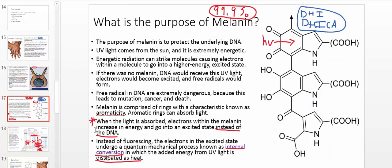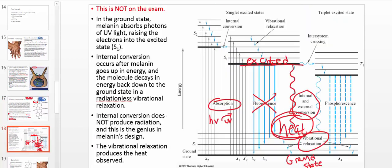So basically what I would ask you on the test is how melanin functions. Your answer would basically be: it protects the DNA from ultraviolet light from the sun by acting as the border patrol. Instead of doing this to the DNA, the light strikes the melanin, causing melanin's electrons to go up in energy. Then internal conversion occurs, by which the energy from the absorbed photon gets dissipated as heat. And that is melanin's mechanism of action.